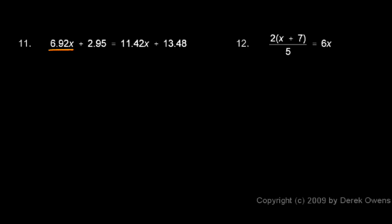So look at this: 6.92x + 2.95 = 11.42x + 13.48. There's an x on each side. I need to get rid of the x's on one side, and I'll do that by subtracting 6.92x. And of course I have to subtract the same thing from each side.